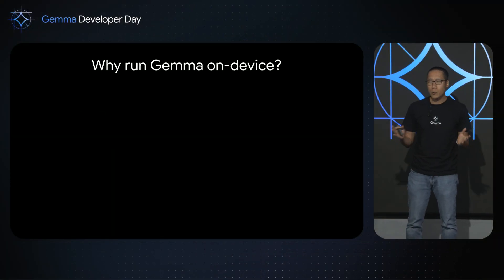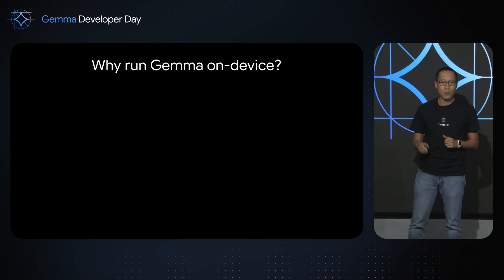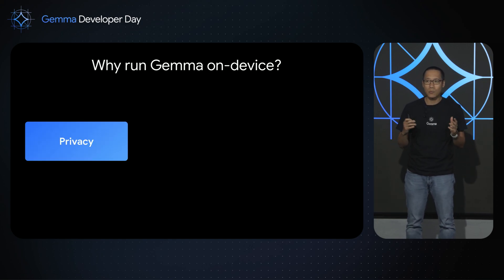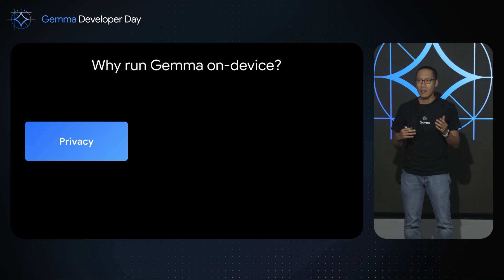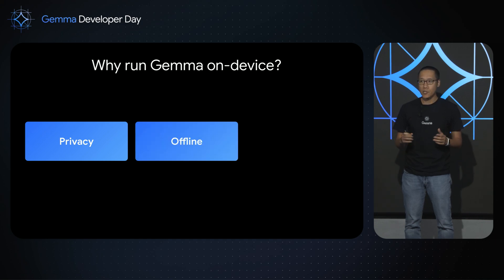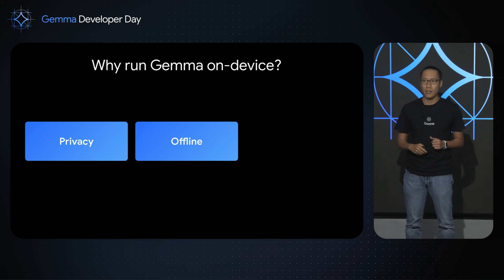So why would you want to run Gemma on-device? There are three main reasons. The first one is privacy — if your app deals with user data that the user may not want to leave the device, then processing it locally is the best option. The second reason is offline availability, because the model runs locally, you don't need any internet connection for it to work.